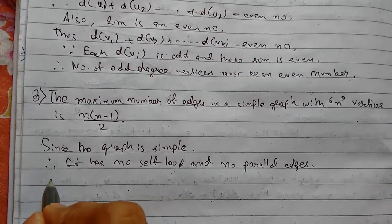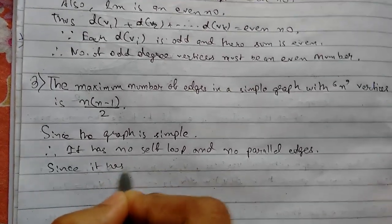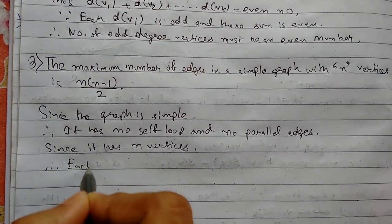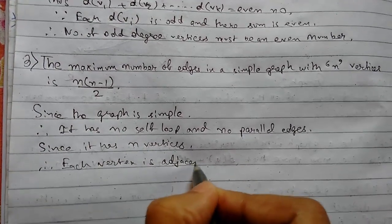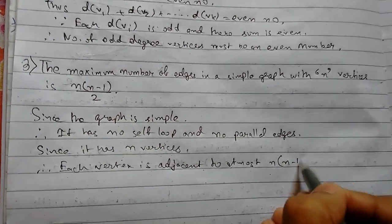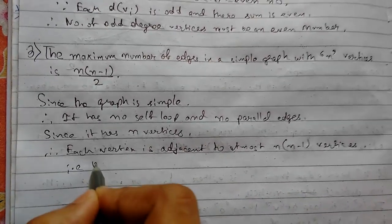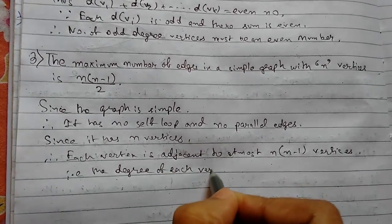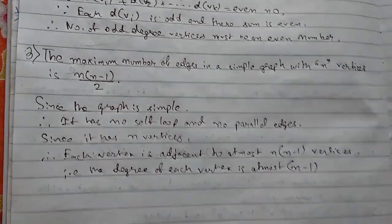We know that since it has n vertices, each vertex is adjacent to at most n-1 vertices. That is, the degree of each vertex is at most n-1. Very simple.